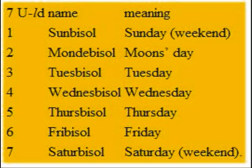One segment and 20 months is when you start school. Drive at 5 segments and 22 months. Vote at 6 segments and 15 months. Legal to drink alcohol at 7 segments and 18 months. Retire at 24 segments.